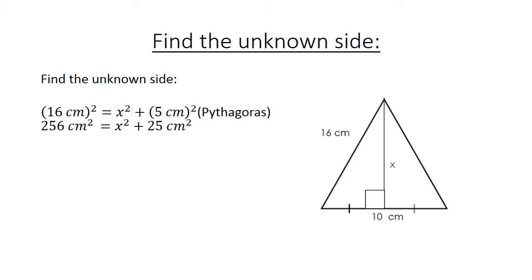256 cm squared equals x squared plus 25 squared. 256 cm squared minus 25 cm squared equals x squared. 231 cm squared equals x squared.